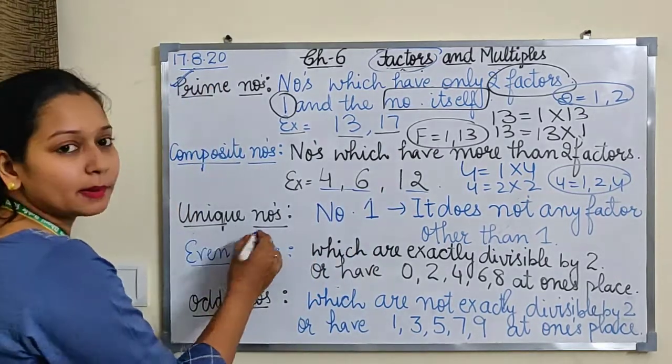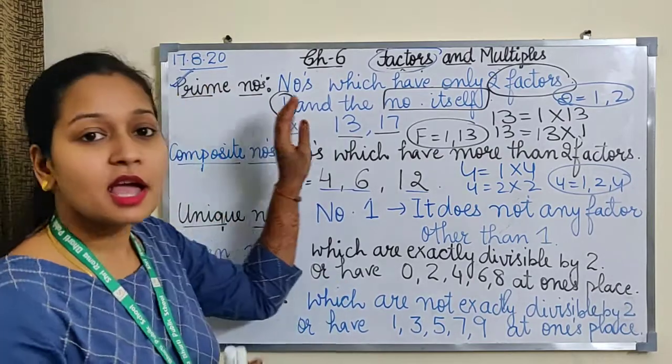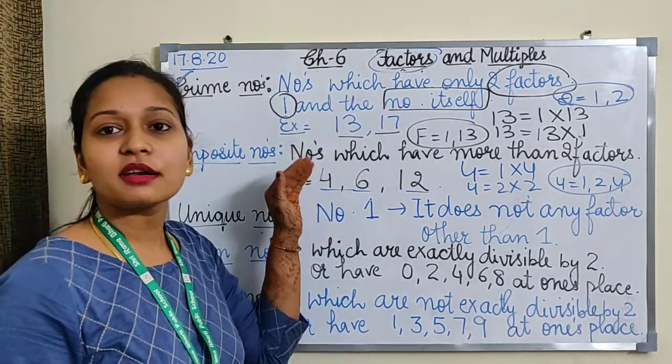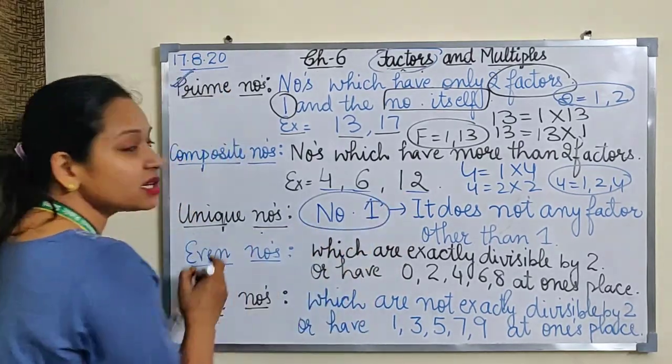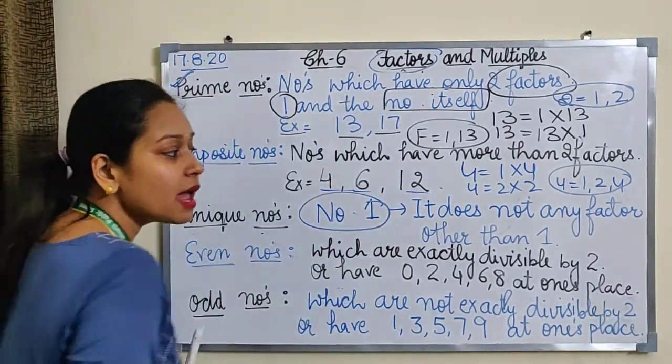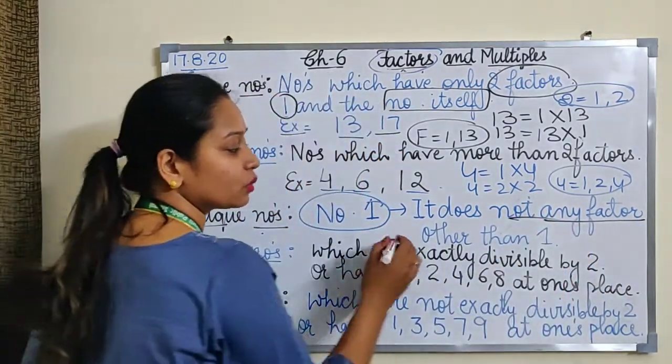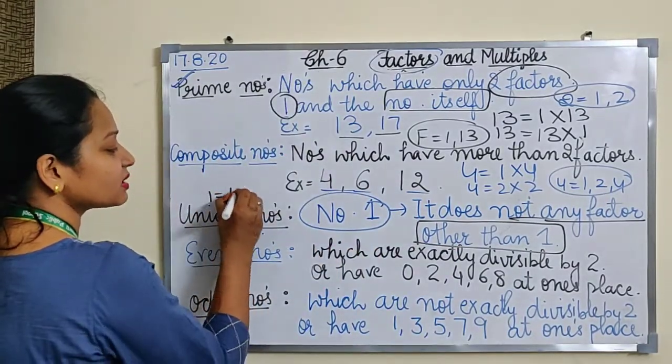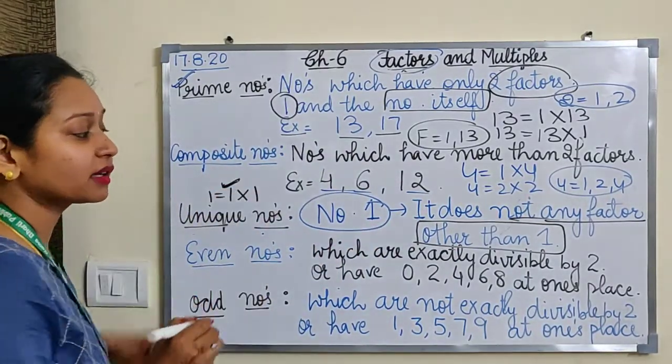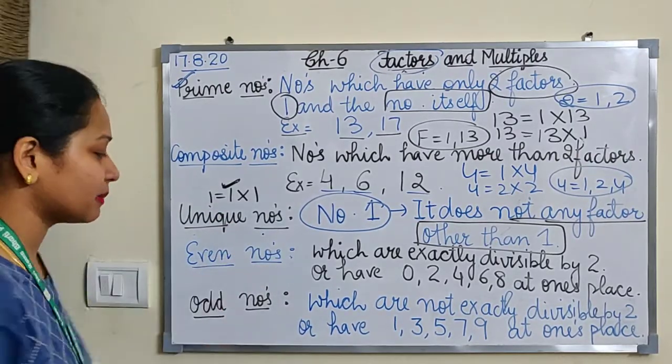Now unique number. Students, you must be thinking that 1 has not come in prime number or composite number. So what kind of number is 1? Number 1 is a unique number. Why is it called unique number? Because it does not have any factor other than 1. 1 has only one factor - 1 times 1. That's why we have given a unique name to it, and the name is unique number.